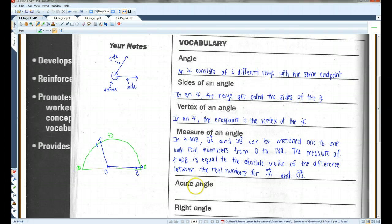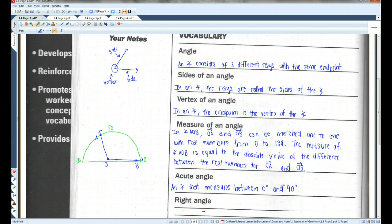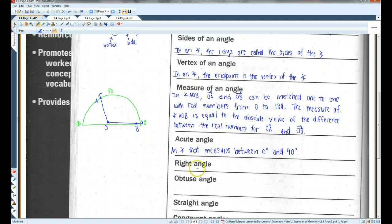Acute angles are angles that are less than 90 degrees. Once again, this little symbol is angle. The little circle next to the number represents degrees. I think most of you guys know that, but just in case someone doesn't. Alright, a right angle is an angle that measures exactly 90 degrees. An obtuse angle, which is what I happen to have drawn here, is an angle that measures between 90 and 180.